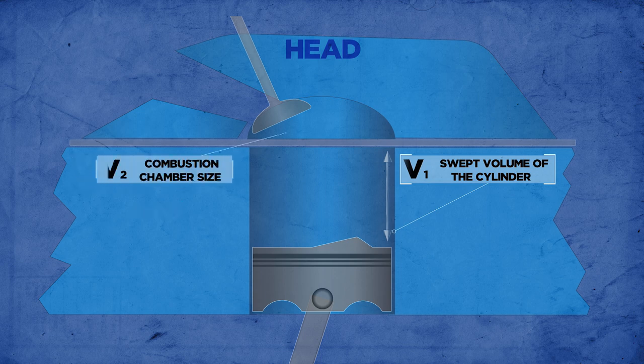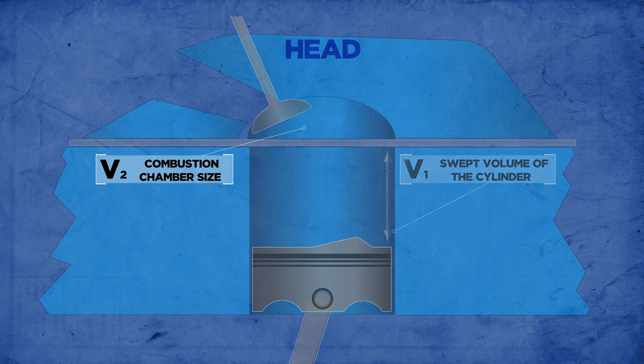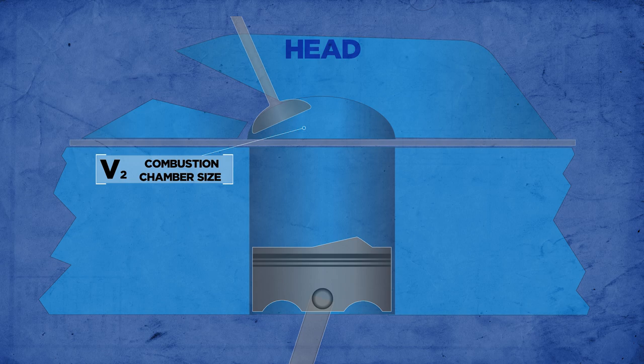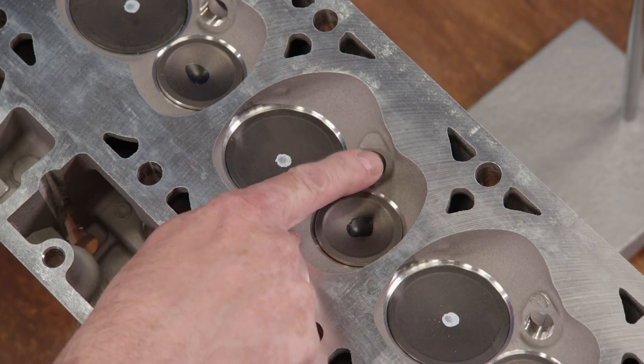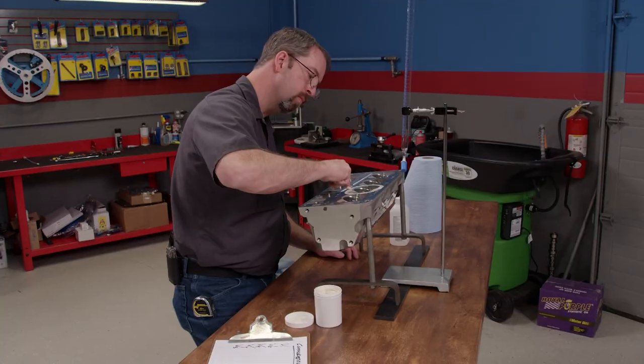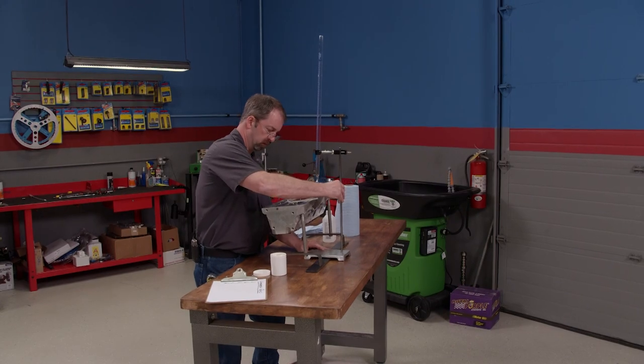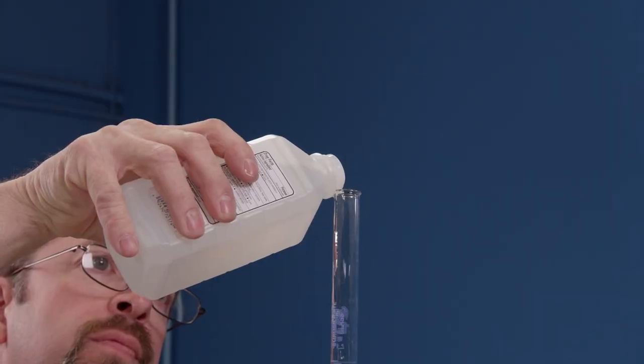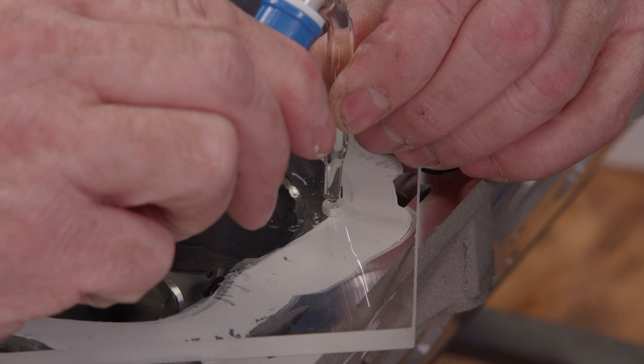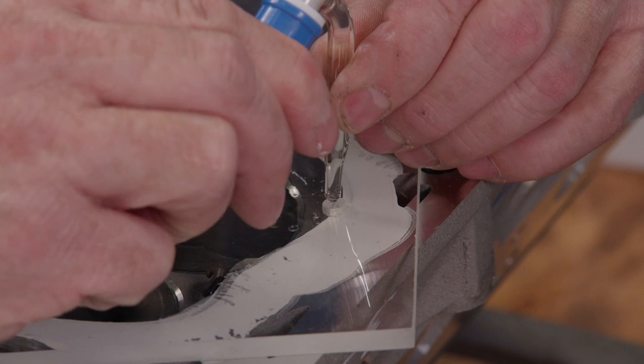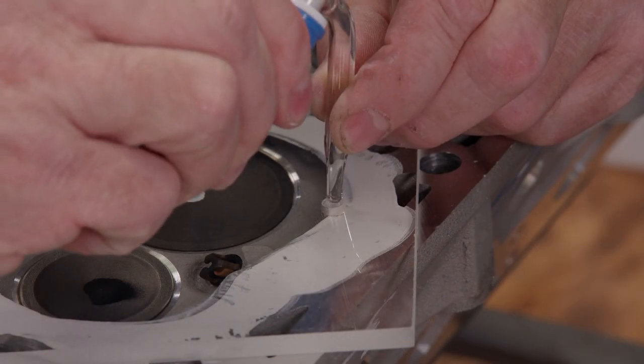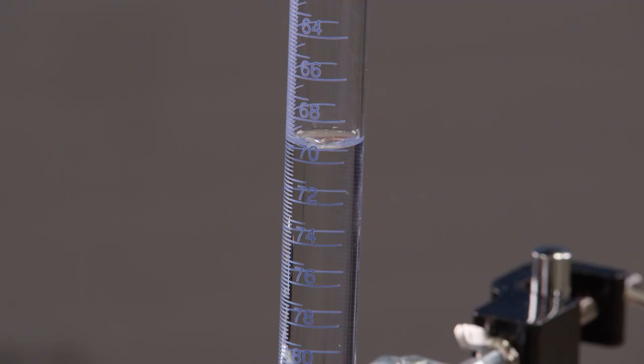The second measurement is combustion chamber volume. Most manufacturers will list this on their spec sheet, but if there's any doubt you can measure it yourself. With the valves installed as well as the correct spark plug, a clear acrylic plate is sealed over the combustion chamber with a little bit of engine assembly lube. With the barrette in place over the hole in the plate, it is precisely filled to 100 cc's. Then it's slowly drained into the chamber until the chamber is full with no air bubbles. We'll check the reading on the barrette. Our result is 69 cc's.